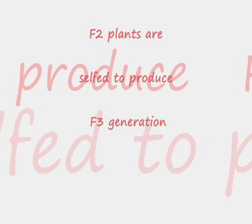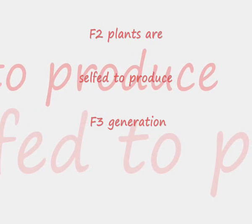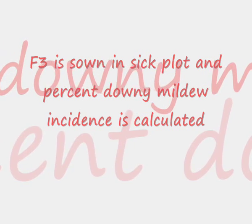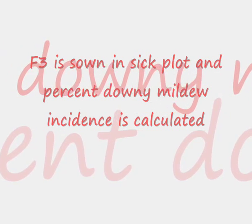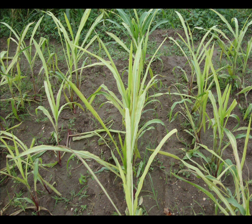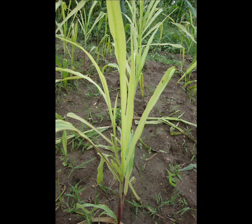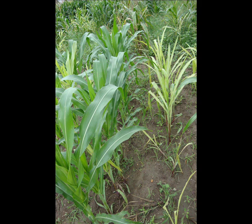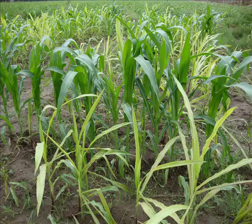F2 plants are selfed to produce the F3 generation. F3 is sown in sick plots and percent downy mildew incidence is calculated. The obtained F1, F2, and F3 populations along with parents are used for studying the inheritance of resistance to sorghum downy mildew.